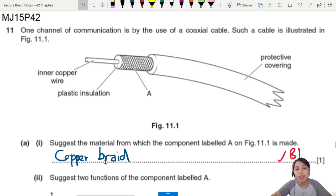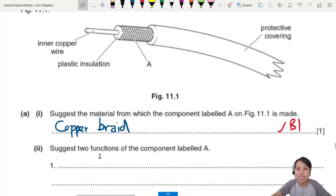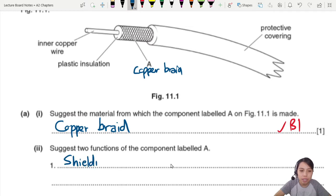I wonder what it's for. That's part two. Suggest two functions of the component labelled A. Why do we have a braid? Why is there a copper mesh wrapping around the wire? Well, the number one top main reason is so that it provides shielding.